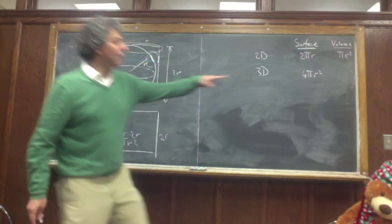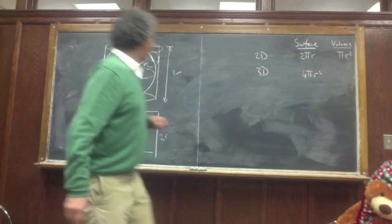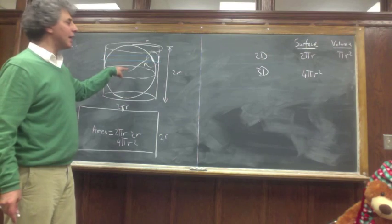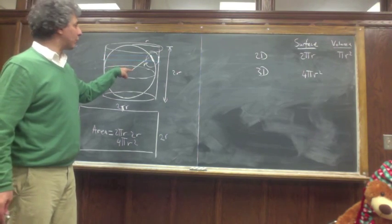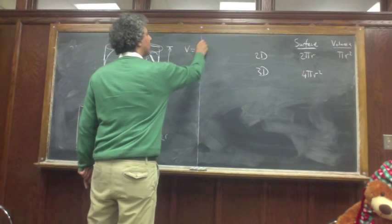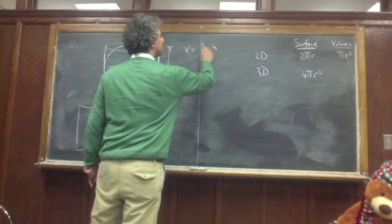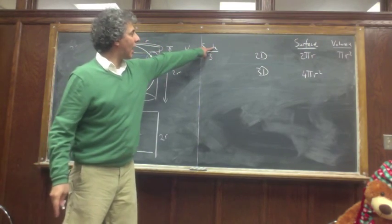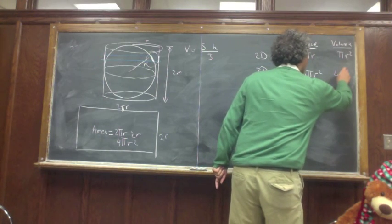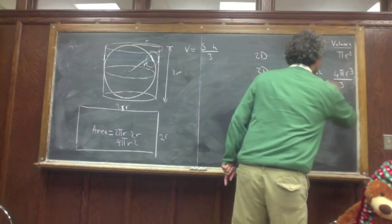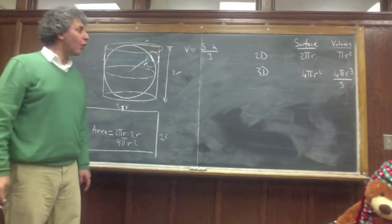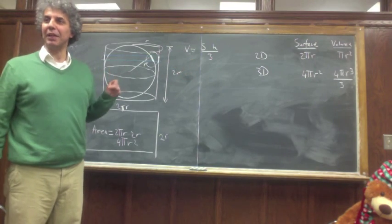Now the volume. We argued and derived the formula: a sphere can be turned into a bunch of cones, and the volume has to be surface times height divided by 3. Height is r, so this has to be 4 pi r cubed divided by 3. That is the volume of a sphere — of course, you have all seen this formula.